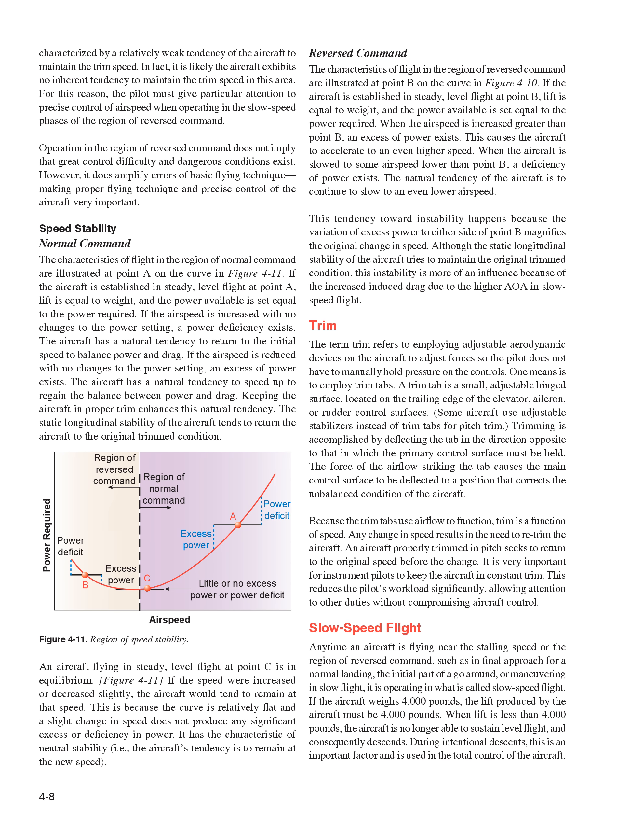Speed Stability — Normal Command. If the aircraft is established in steady, level flight at a point in the normal command region, lift is equal to weight and the power available is set equal to the power required. If the airspeed is increased with no changes to the power setting, a power deficiency exists and the aircraft has a natural tendency to return to the initial speed. If the airspeed is reduced with no changes to the power setting, an excess power exists and the aircraft has a natural tendency to speed up to regain the balance between power and drag. Keeping the aircraft in proper trim enhances this natural tendency, and the static longitudinal stability of the aircraft tends to return it to the original trimmed condition.